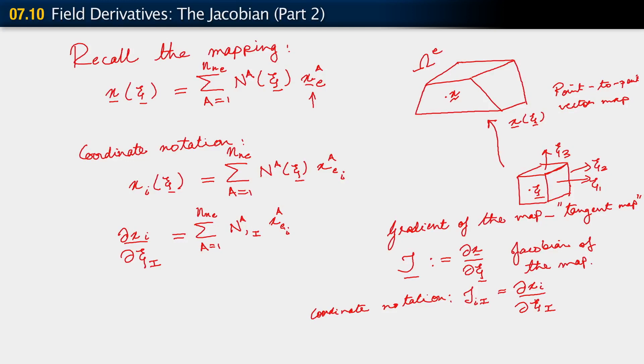Now, if you've studied continuum mechanics, you will recognize that to be something. That is essentially the deformation gradient from continuum mechanics, from the kinematics of continuum mechanics. Anyhow, we're not going to use that nomenclature. We'll just call it the Jacobian of the map, which is what it is mathematically.